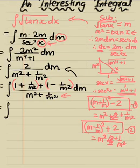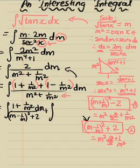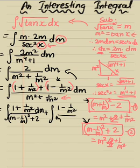The first integral is (1 + 1/m²) over (m − 1/m)² + 2 dm — using equation 2. The second integral is (1 − 1/m²) over (m + 1/m)² − 2 dm — using equation 1.